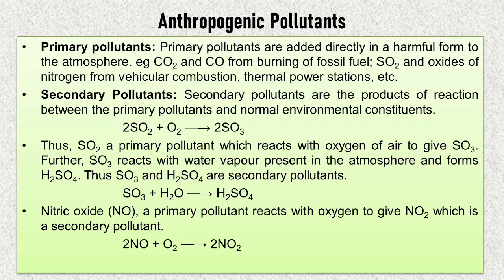Secondary pollutants are formed from primary pollutants already present in the atmosphere. For example, sulfur dioxide is a primary pollutant which reacts with oxygen in the air to form SO3 (sulfur trioxide), which is a secondary pollutant. Similarly, nitric oxide is a primary pollutant which reacts with oxygen to produce nitrogen dioxide, which is the secondary pollutant.